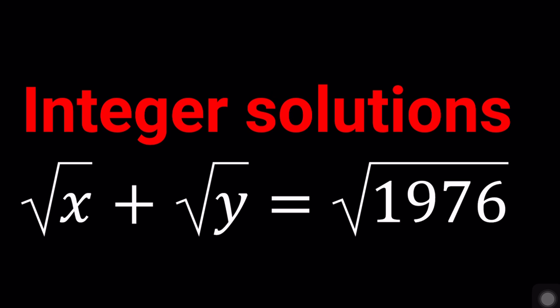So we have x and y as integers and we have the square root of x plus the square root of y equals the square root of 1976. This problem appeared on a math competition in 1976 but I can't remember which one because I wrote this a while ago and I thought this might be a good problem to solve.